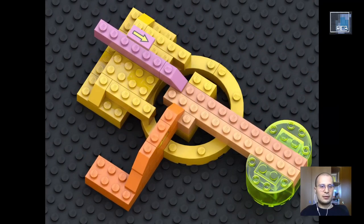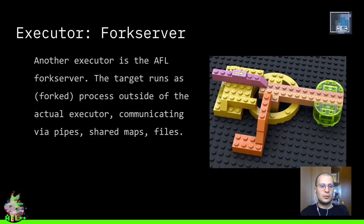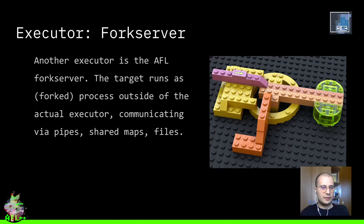Another more complex example is the fork server of AFL — a more complex mechanism to control the target using inter-process communication. There are pipes between two processes, one of which is the fuzzer. There is an intermediate process that is a copy of the target. Each time the fuzzer requests a new execution via the pipe, it forks itself into a target child process — the actual target process being fuzzed. When the target child exits, it is communicated back to the intermediate fork server, which communicates the outcome via another pipe to the fuzzer.